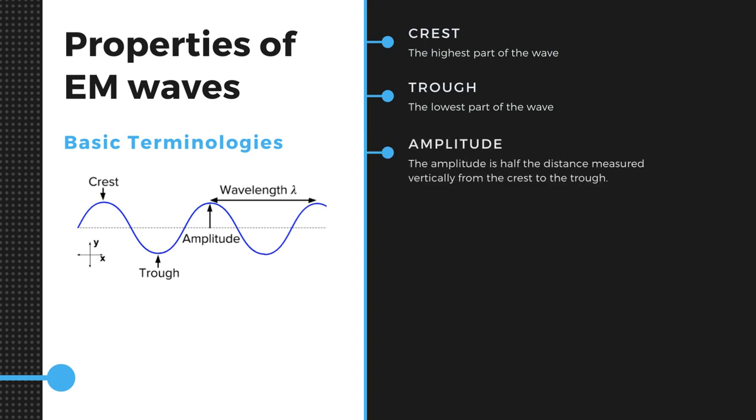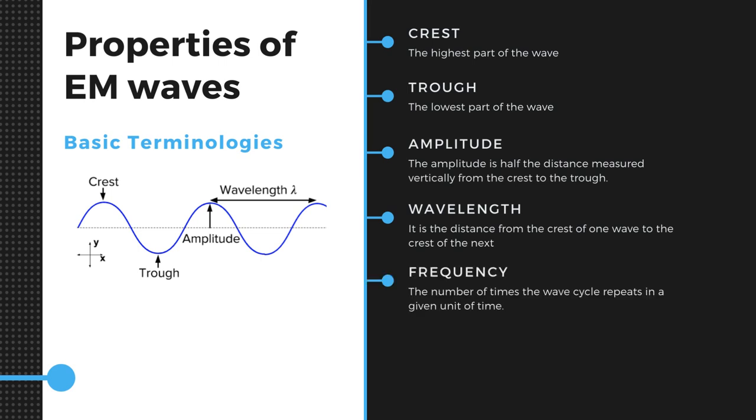Amplitude: amplitude is half the distance measured vertically from crest to trough. Wavelength: a wavelength or one cycle is the distance from the crest of one wave to the crest of next, or between two similar points on adjacent waves. A frequency is defined as the number of times the wave cycle repeats in a given unit of time. It is measured in Hertz.